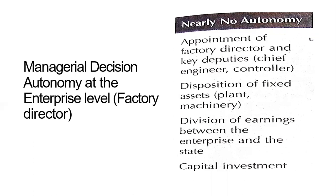So what are those things? Let's explore that. The very first category is nearly no autonomy. For instance, factory directors have no authority or decision input on the hiring of any director, deputy directors, chief engineers, or controllers. If you are a factory director, you cannot appoint your deputy directors or chief engineer.